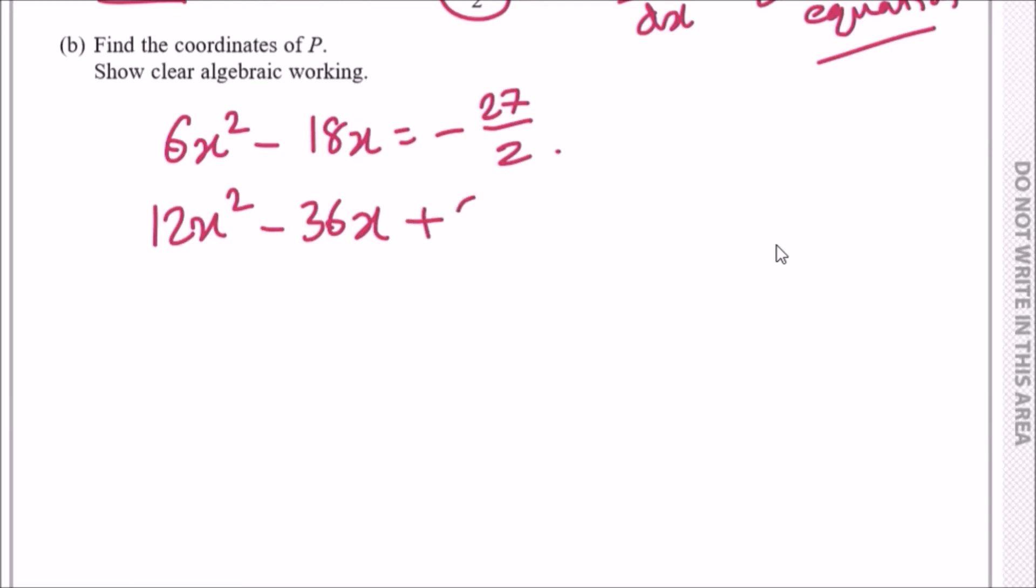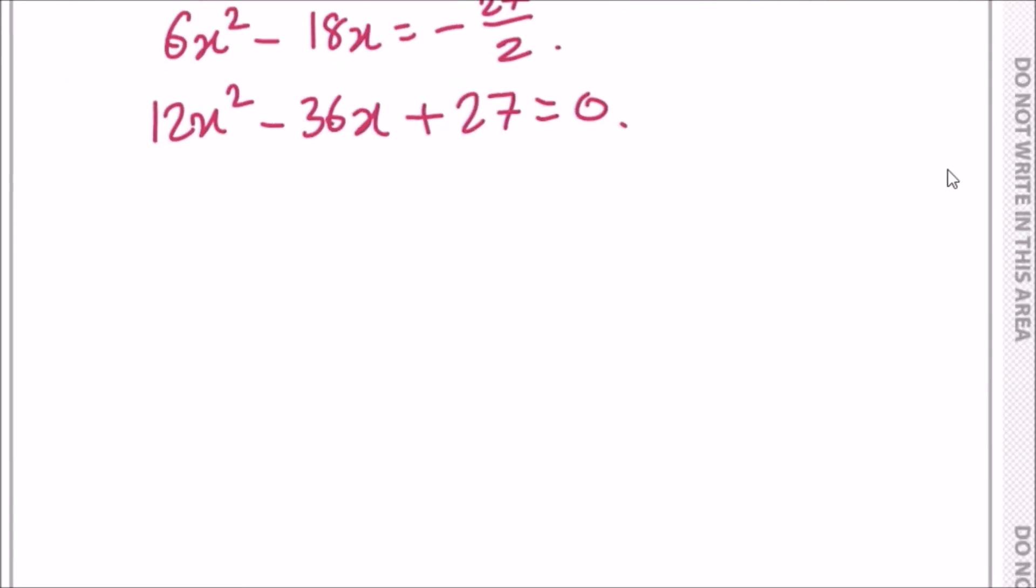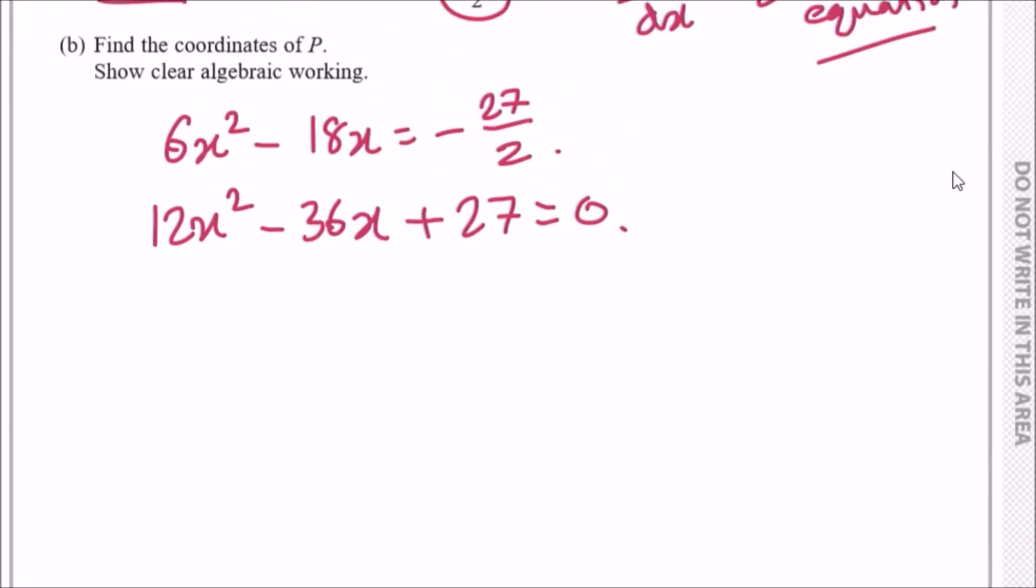So now we have a clear quadratic equation. Can we simplify this to make it easier for us? Yes, you can. I'll just divide this by 3 to simplify, so I get 4x² - 12x + 9 = 0. I think that's the best you can do.